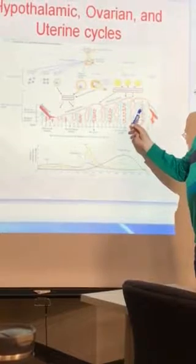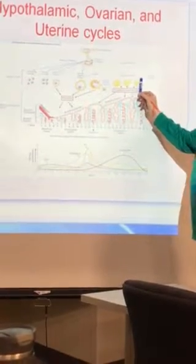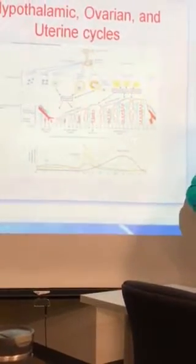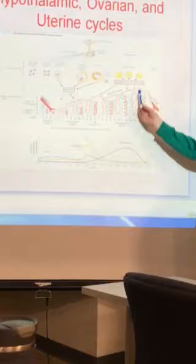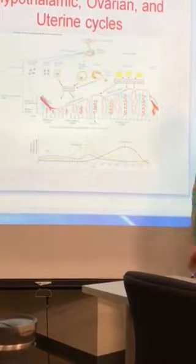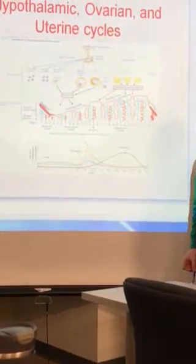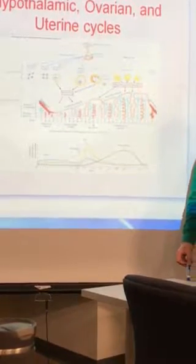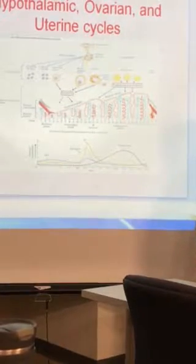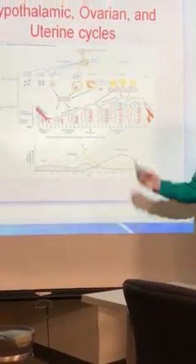No beta-HCG. Once this corpus luteum dies, this endometrium is dependent on having progesterone and estrogen, particularly progesterone. Once that stops and drops off, you then trigger off the next month's menstrual cycle, and you lose that lining, and you lose the egg that ovulates. So that's how you go from one cycle to the next.